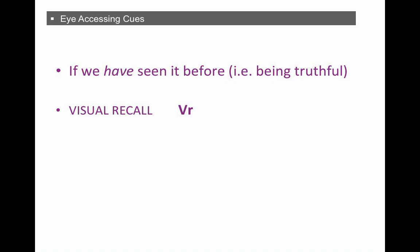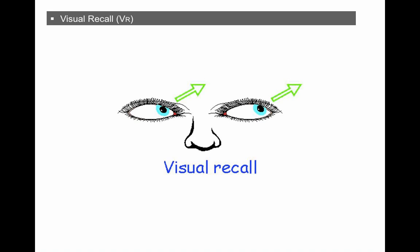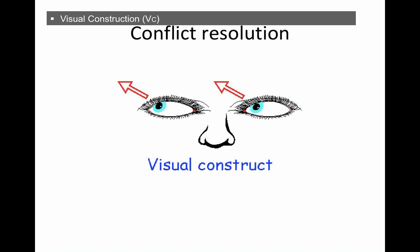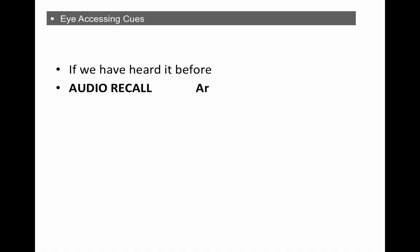So if we have seen it before, we're being truthful. Visual recall, VR, look back on the diagrams I've just showed you. Remembering that in some people they can be back to front, so they could be looking up and to the right. But this tends to be the norm, visual recall. If you've never seen it before, and we're making it up, or imagining it, VC, visual construction, the opposite direction, and up.